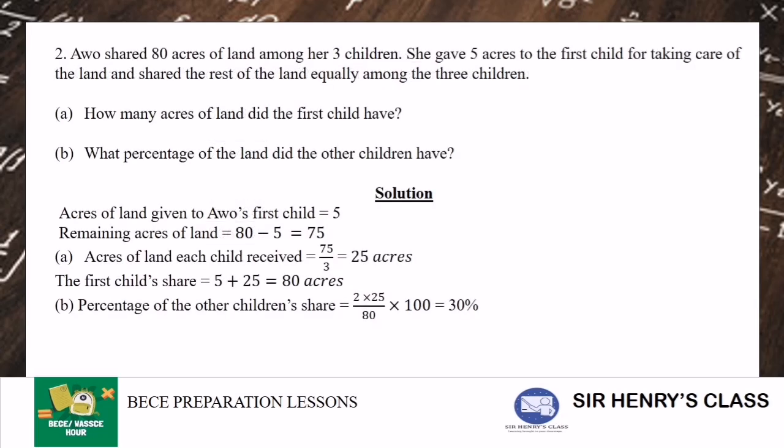Let's consider number 2. Awo shared 80 acres of land among her 3 children. She gave 5 acres to the first child for taking care of the land and shared the rest of the land equally among the 3 children. So how many acres of land did the first child have and what percentage of the land did the other children have? Just want to try your hands on it. If there's any difficulty, refer to the solution. 30% is the answer.